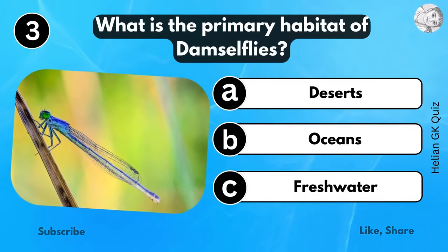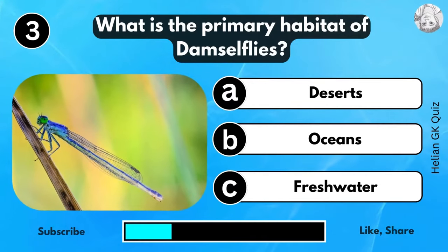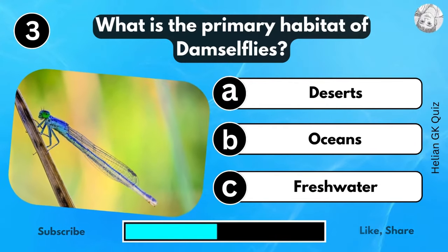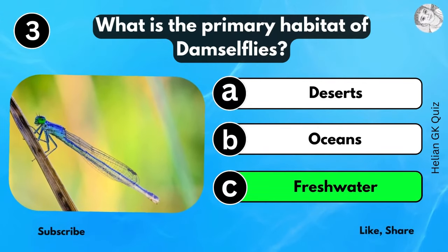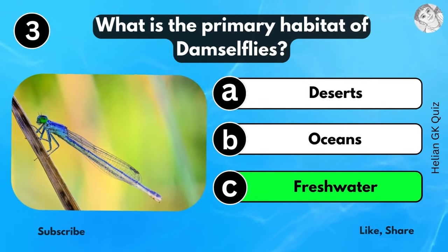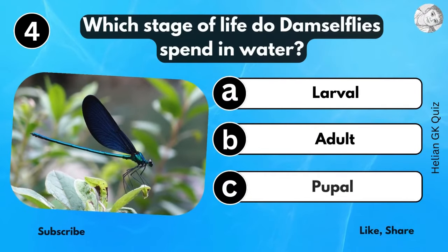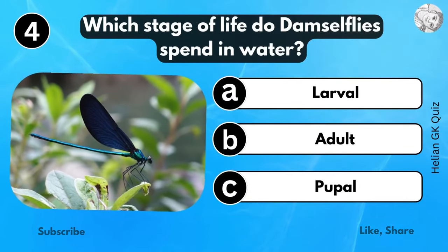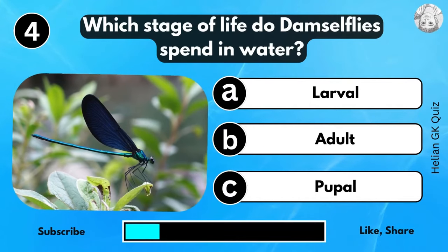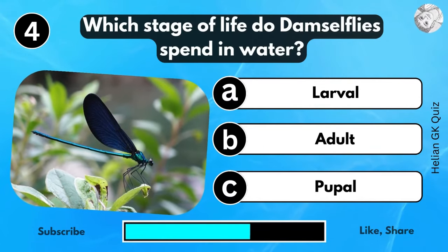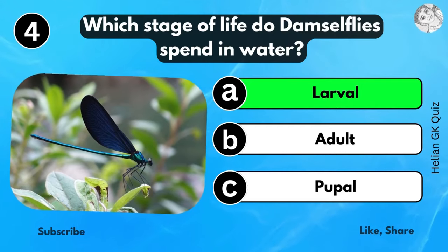What is the primary habitat of damselflies? Fresh water. Which stage of life do damselflies spend in water? The larval stage.